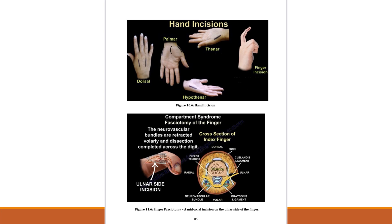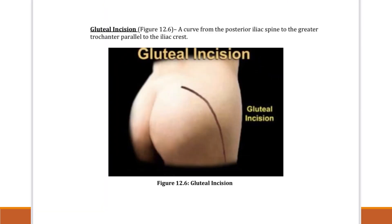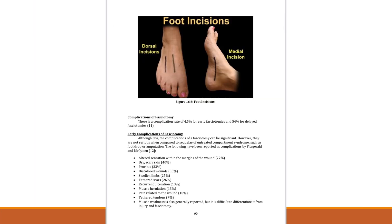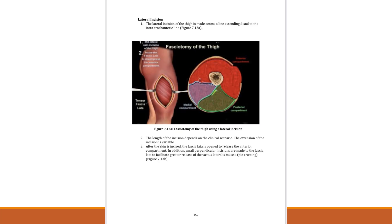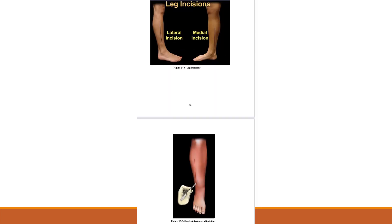We need to know how to do fasciotomy in the entire upper extremity and in the entire lower extremity — from the gluteal region fasciotomy to the foot — and everything in between, such as how we do thigh fasciotomy, how we do leg fasciotomy, and how to do double incision fasciotomy.